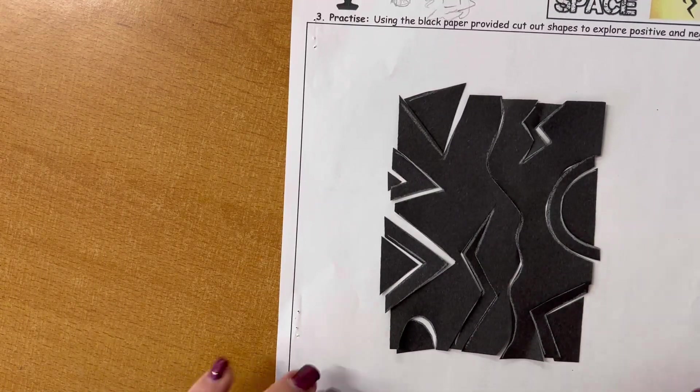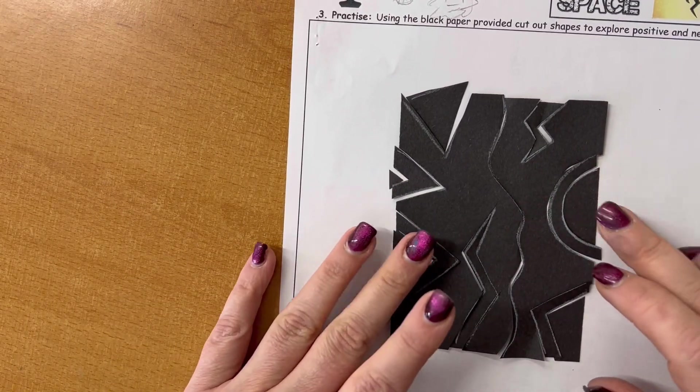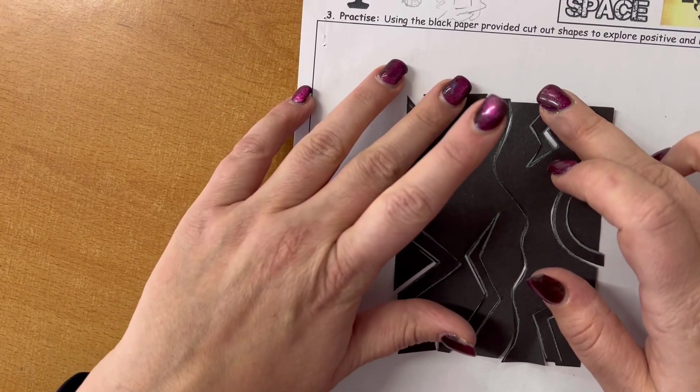Okay, so all of my shapes are now arranged back as if they're fitting back into that rectangle.